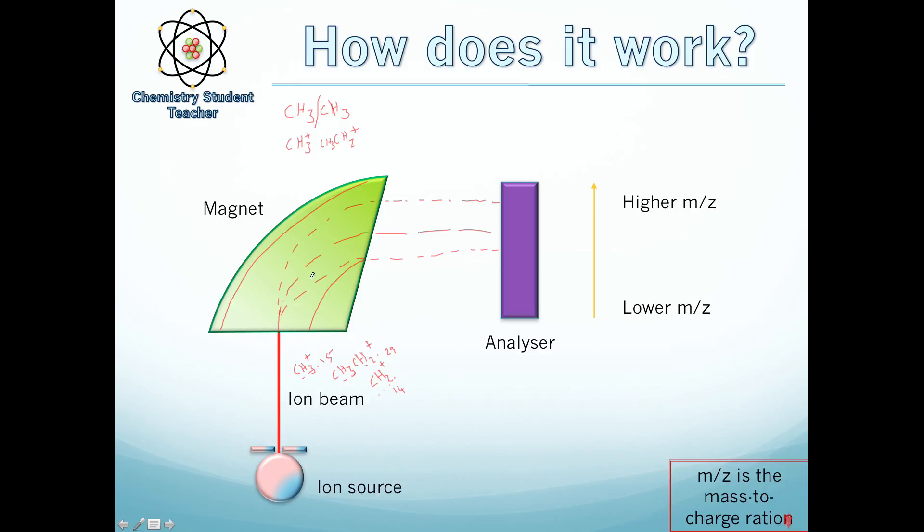You get the smaller the fragment, the further it will move around, the further it will curve around. The bigger the fragment, the heavier it is, and the harder for the magnetic field to curve it around this corner here, which is why you get this splitting. So you get the higher m/z there, and the lower m/z there.